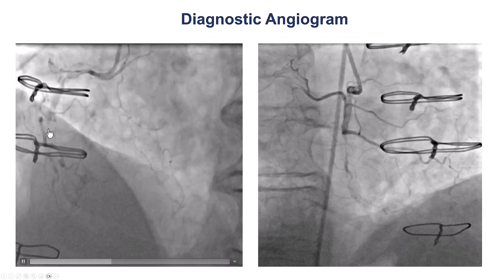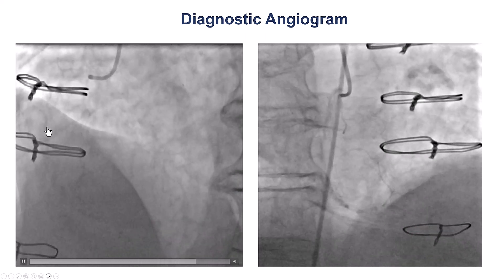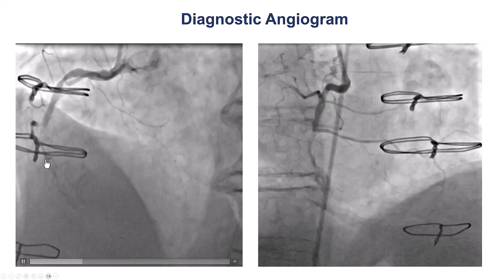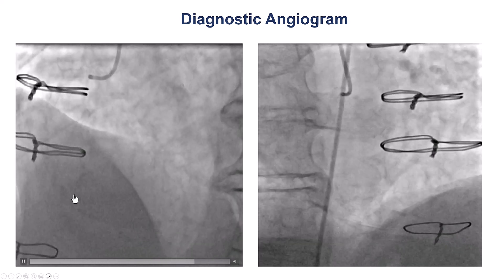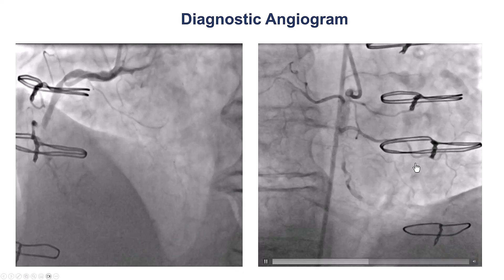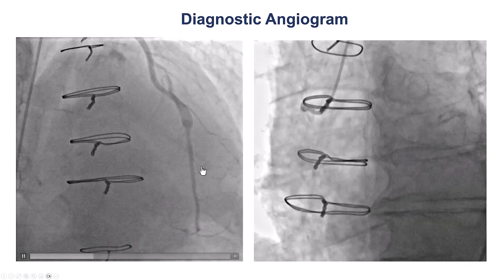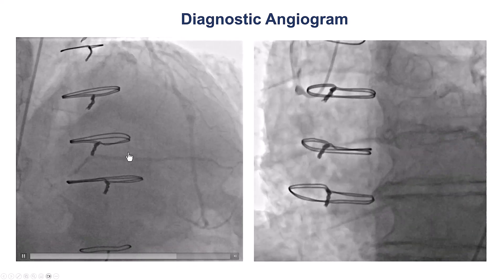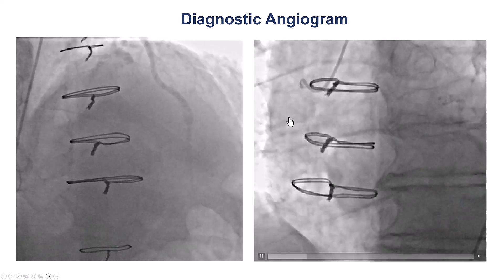The diagnostic angiogram shows a clear proximal cap, but there is an acute marginal arising close to the proximal cap. There is significant calcification through the occlusion, and the distal vessel is filling via both ipsilateral and contralateral collaterals. There were some epicardials filling the right posterolateral. The saphenous vein graft to the RCA was occluded.